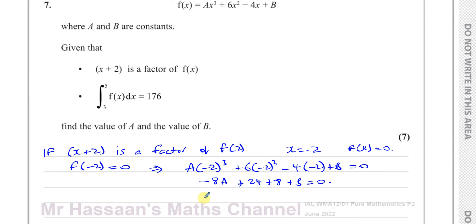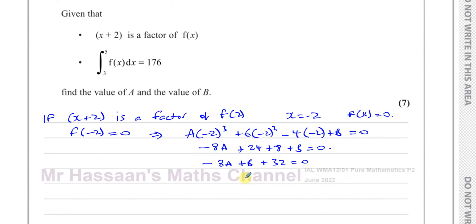So if we simplify this, you have -8a plus b plus 32 equals 0. So we can write an equation: -8a plus b is equal to -32. So we can call that equation 1. That's one equation we formed from this information.